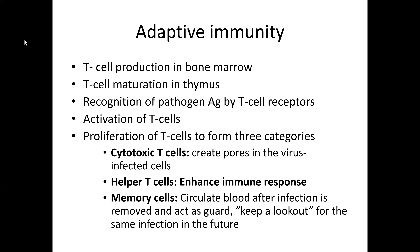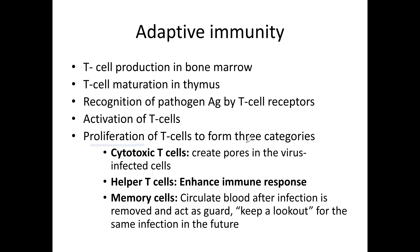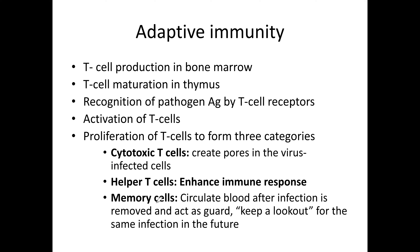T cells are produced in the bone marrow but move to the thymus to mature. The process is then similar: a T cell receptor recognizes the pathogen, activating the T cell, and T cells then proliferate and form three categories: cytotoxic T cells, which create pores in virus-infected cells and kill your own cells that are already infected by viruses; helper T cells, which enhance the immune response; and memory T cells, which circulate in the blood after the infection is removed and guard against the same future infection.